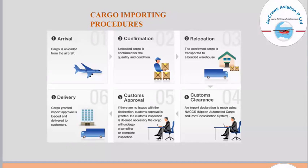The next step is customs clearance, where an import declaration is made using NACPS, that is the NACPS Automated Cargo and Port Consolidation System. Once it has cleared customs, the fifth step is customs approval. If there is no issue with the declaration, customs approval is granted; if a customs inspection is deemed necessary, the cargo undergoes sampling or complete inspection. Once approval is granted, the cargo is ready for delivery — the last step, where cargo granted import approval is loaded and delivered to customers.